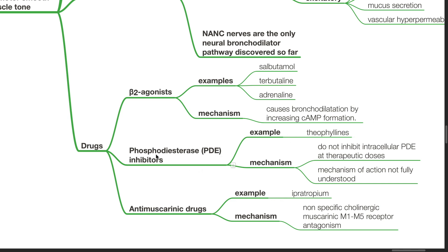Phosphodiesterase inhibitors such as theophylline do not inhibit intracellular PDE at therapeutic doses, and the mechanism of action for bronchodilation is not fully understood. Anti-muscarinic agents such as ipratropium bromide are non-specific cholinergic muscarinic M1 to M5 receptor antagonists, and this causes bronchodilation.